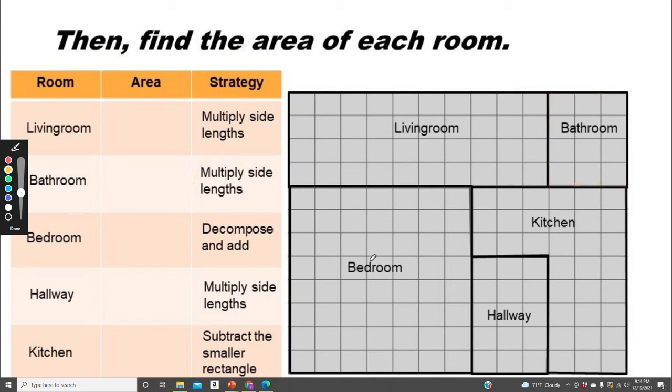For the bedroom, we have a rectangle that is 1, 2, 3, 4, 5, 6, 7, 8 by 1, 2, 3, 4, 5, 6, 7. So instead of multiplying 8 times 7, I'm going to try to decompose and add.